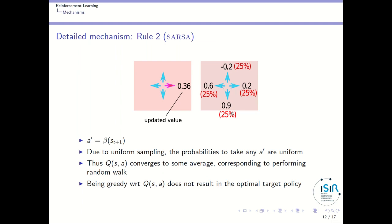In SARSA, the next action a' is taken uniformly, giving 25% probability to each possible action. The value that gets propagated will be an average of the different values reachable from the next state. This does not converge to the highest-value action but rather corresponds to performing a random walk. Being greedy with respect to these averaged values won't result in an optimal target policy.